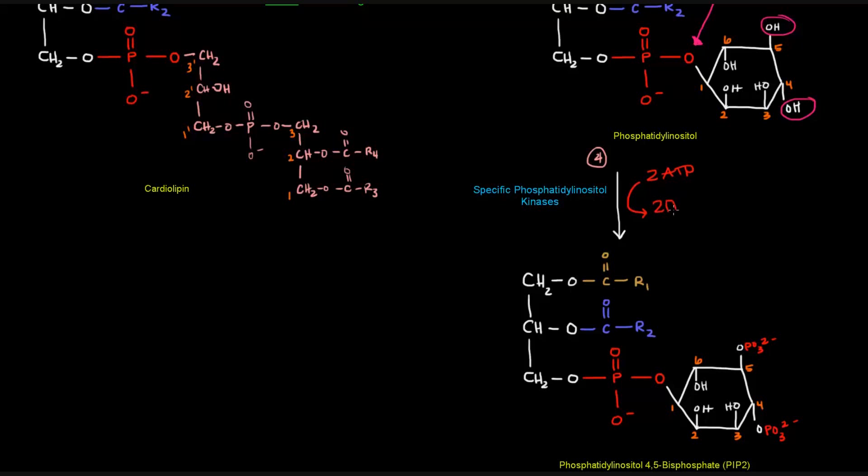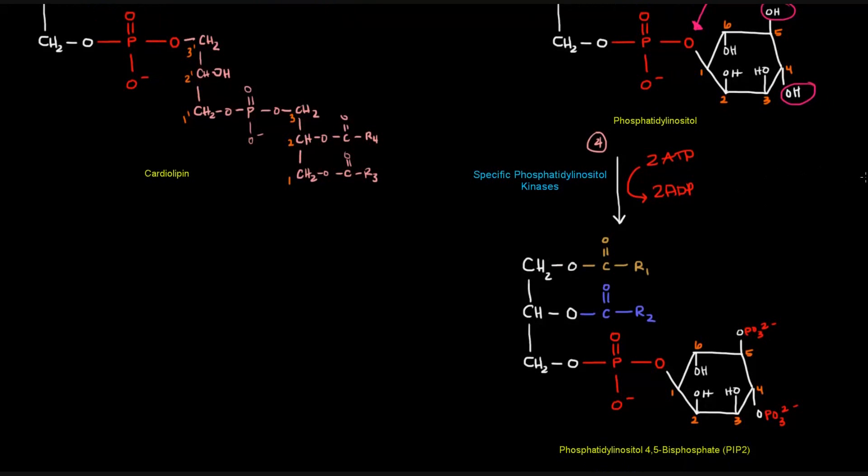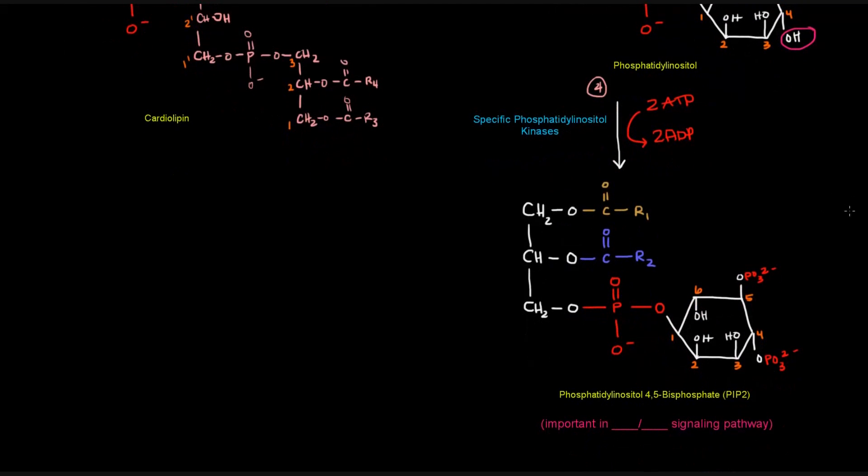And we'll add two so that each of those groups gets a phosphate group. And that gives us phosphatidyl inositol 4,5-bisphosphate, sometimes known as PIP2. And that is important because we've seen it before in the IP3 DAG signaling pathway.